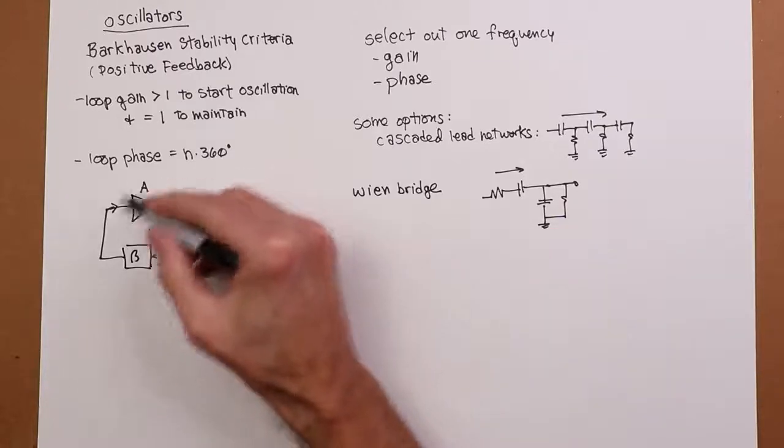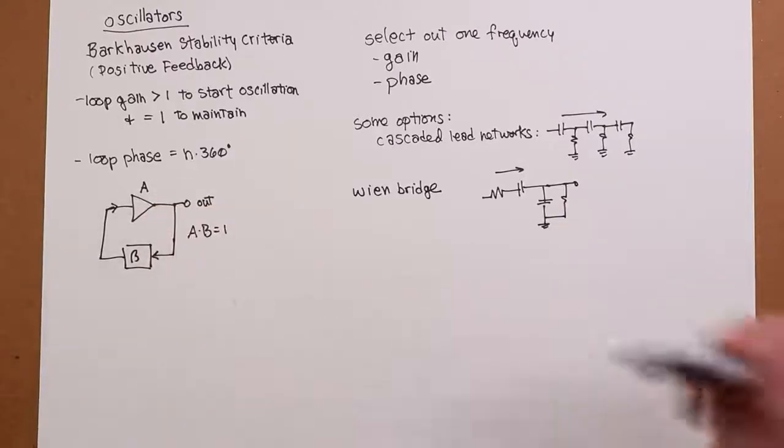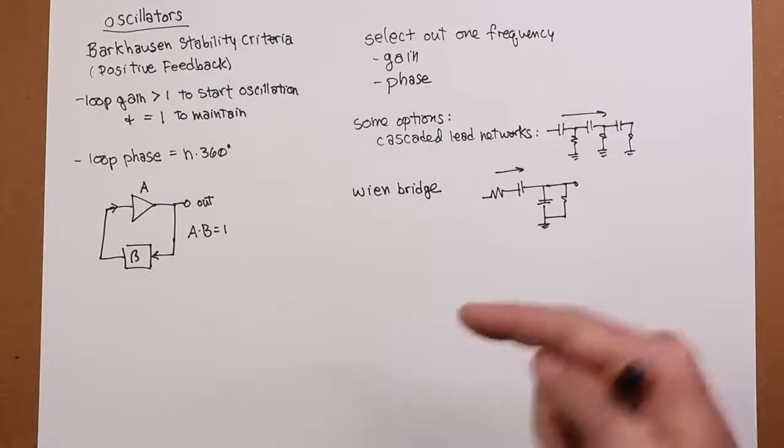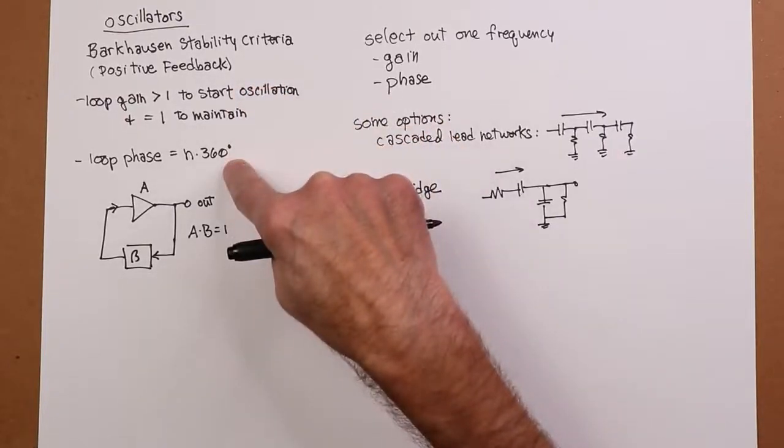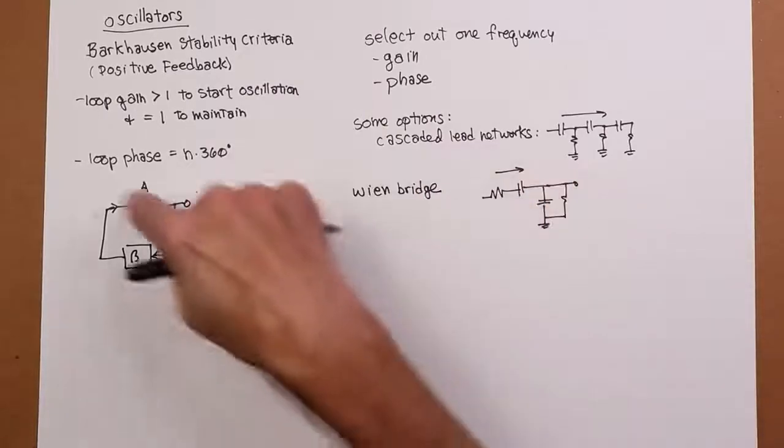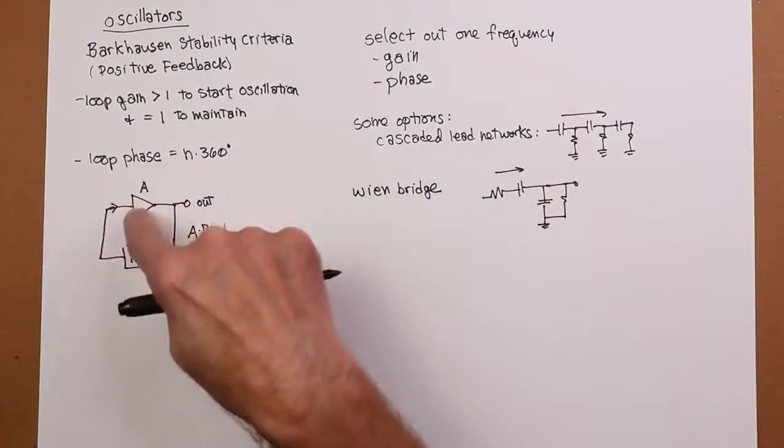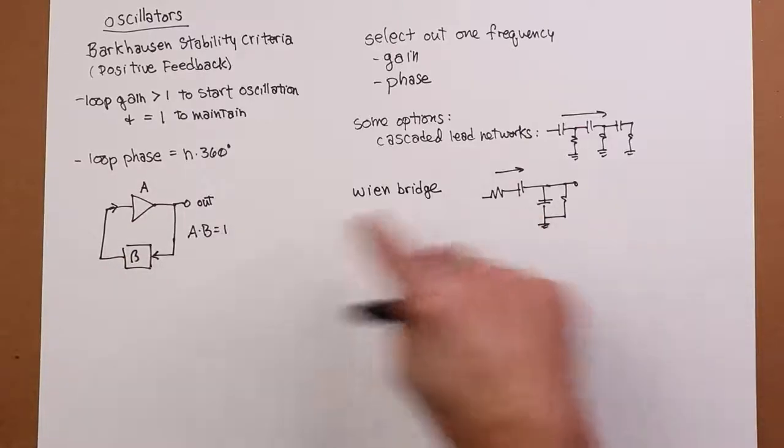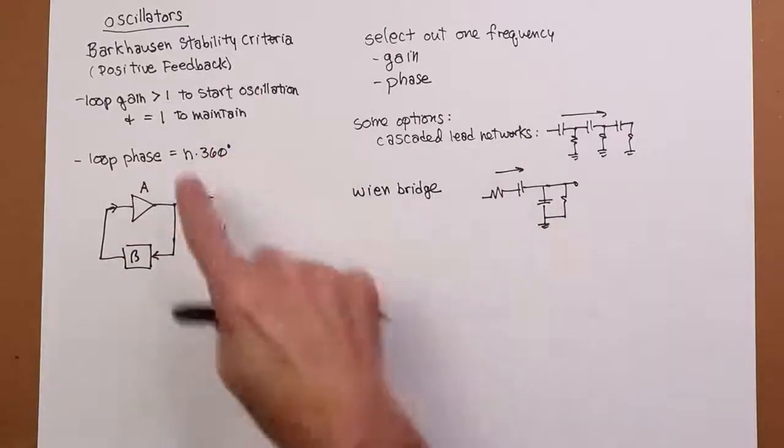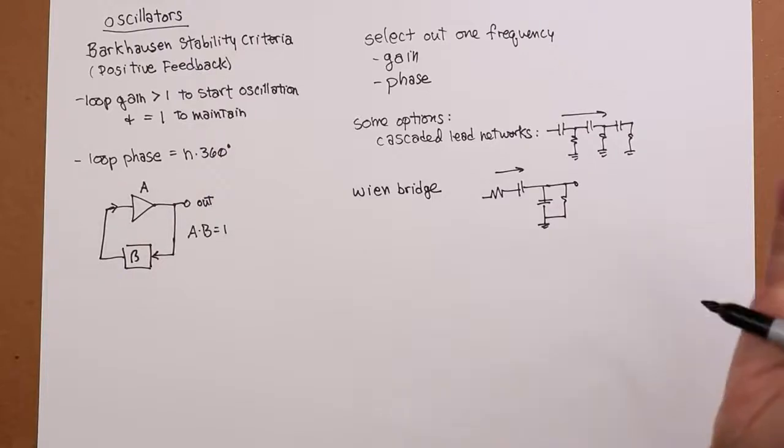So again, if you had a gain over here that could overcome that, at that particular frequency you would have both the gain part and the phase part, because this would be zero degrees. And in that case you would have a non-inverting amplifier. Non-inverting amplifier, zero, zero for this at FC. So that's N360 where N is zero. So that's a possibility.